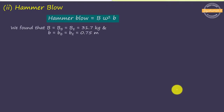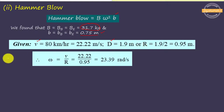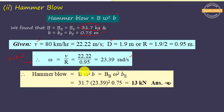Now we calculate the hammer blow. We have B = 31.7 kg, small b (radius of balance mass) is given, and the vehicle speed is 80 km/h. Using v = r·ω we find ω, then substitute all values into Hammer Blow = B·ω²·b to obtain the hammer blow value of 13.2 kN.